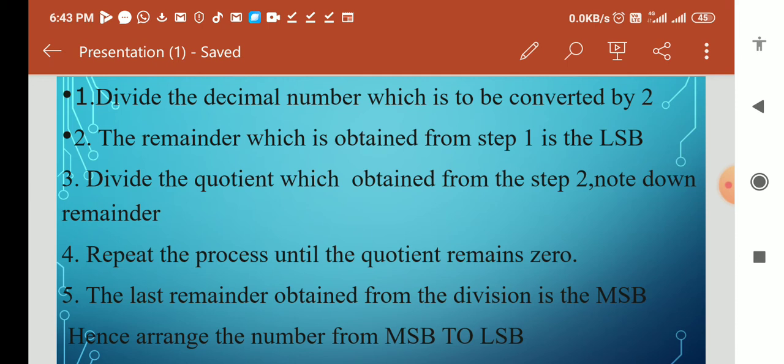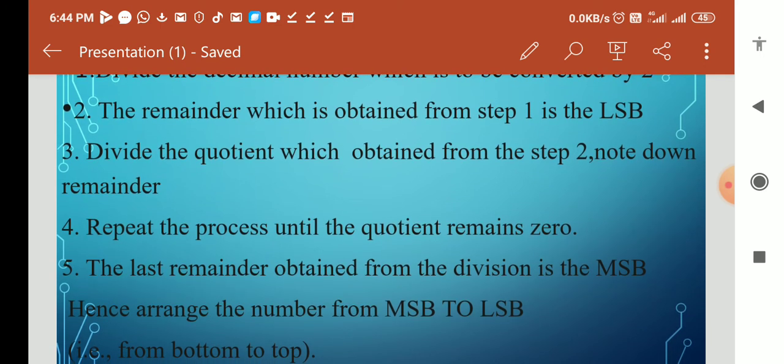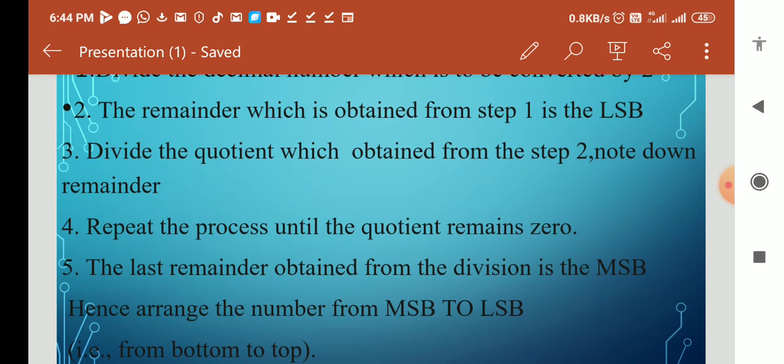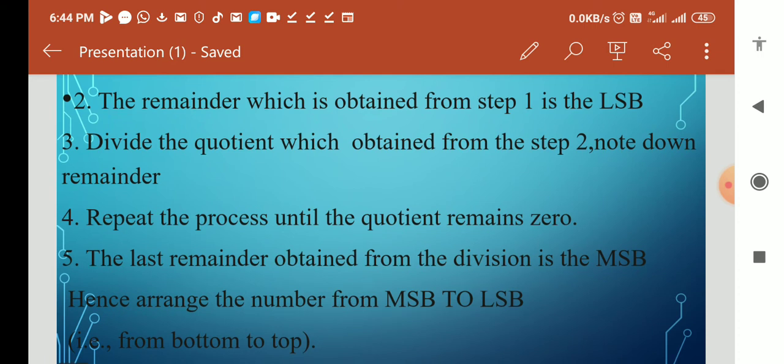The number has to be divided by two. Step two: the remainder which is obtained from step one is considered as the lowest significant bit (LSB). The first remainder is called the lowest significant bit. Divide the quotient which is obtained from step two.